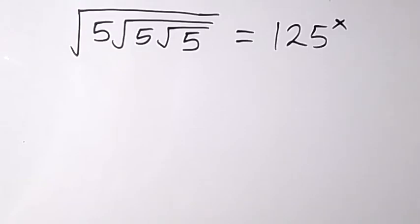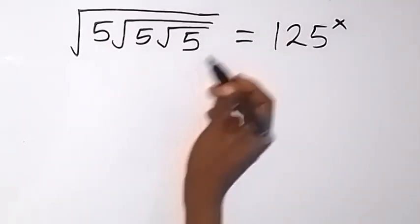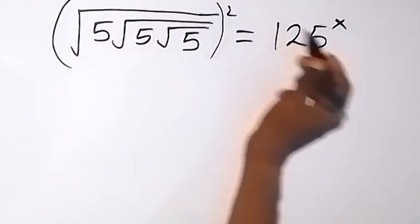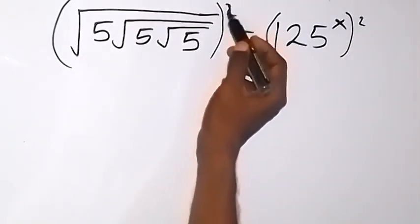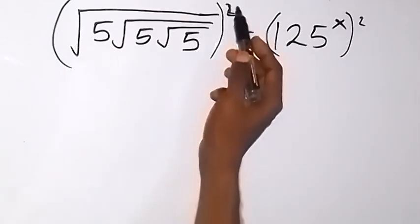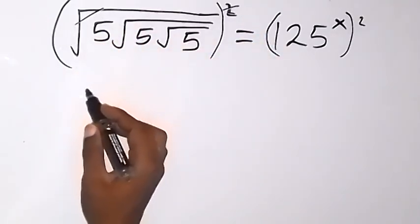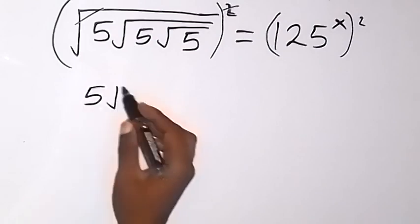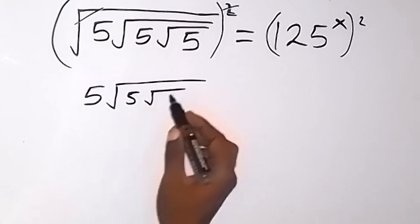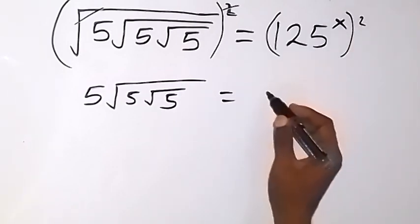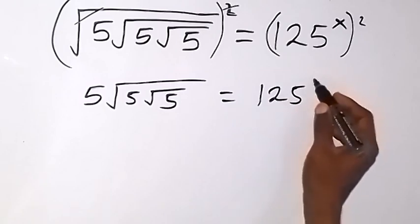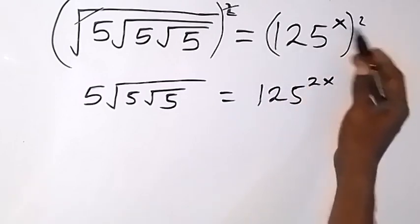Good day. To solve this problem, let's square both sides of this equation. When we square both sides, the square on the left affects the first square root, cancelling it, and we are left with 5 root 5, and still root 5 inside. On the right side, using the power of 2, we have 125 raised to power 2x, because this power multiplies.